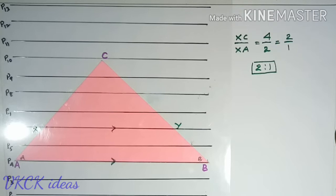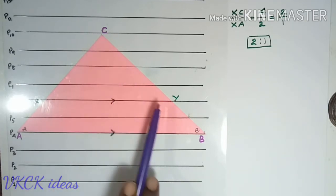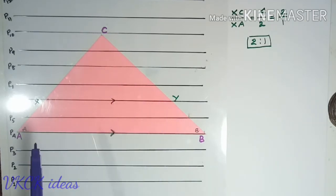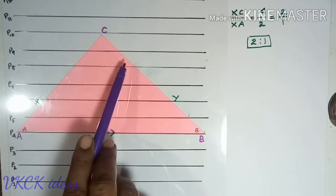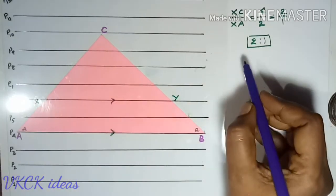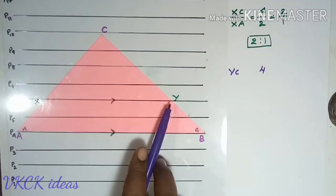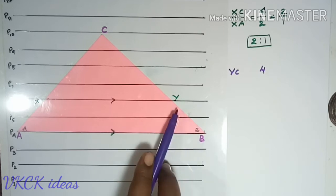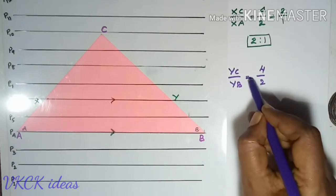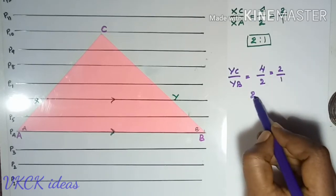Now let us observe another side, that is BC. The line XY is intersecting BC at the point Y. We shall observe the segments made here. XY is divided into 1, 2, 3, and 4 equal segments. Now YC is 4 and observe YB, it is 2 parts. Now if you take the ratio, it is again 2 by 1, that is 2 is to 1.